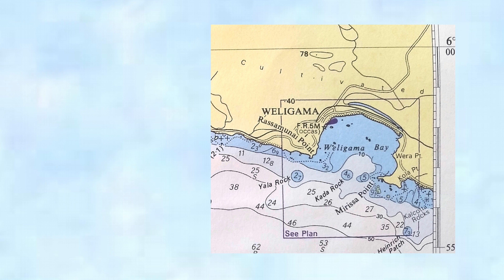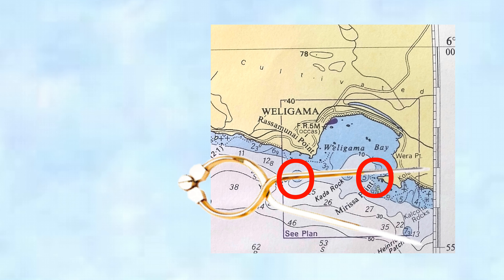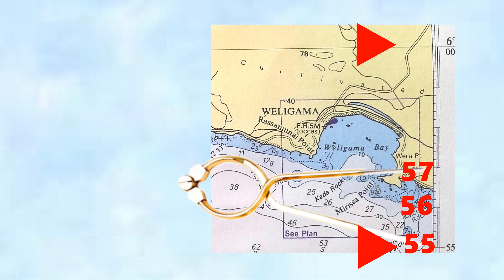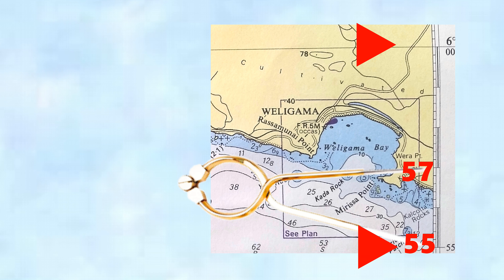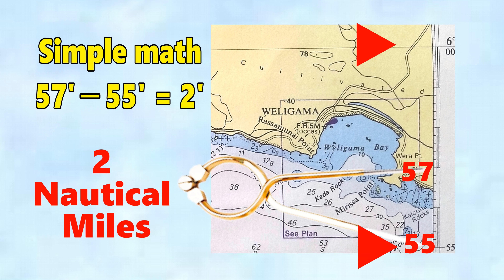Here's another example — Weligama in Sri Lanka. What's the distance between the yellow rock and Marissa Point? We put the dividers on there and take them round to the latitude scale. You can see it's between 55 minutes and 57 minutes. This is the full degree, so counting: 55, 56, 57, 58, 59 and up to 60 minutes. Our distance lies between 55 and 57 minutes. Simple mathematics: 57 minus 55 is 2, so that distance is 2 nautical miles.